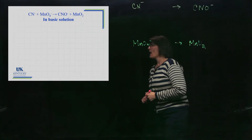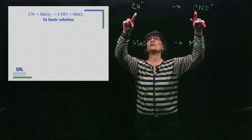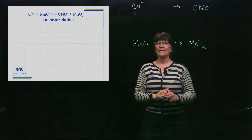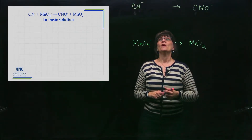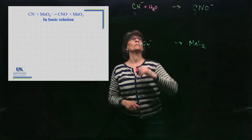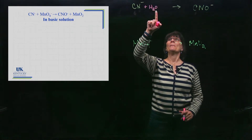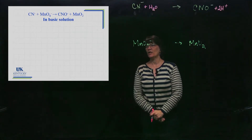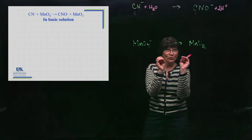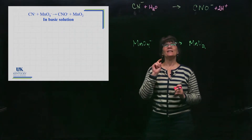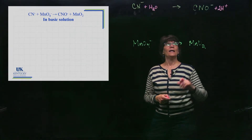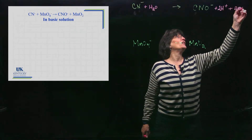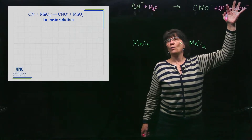Step one for the CN⁻ half-reaction: balance elements other than oxygen and hydrogen. One carbon and one nitrogen on each side — balanced. Now balance oxygen: there is one oxygen on the product side, so add one water to the reactant side. That brings hydrogens along, so we add H⁺ on the opposite side. But since it's basic, we don't leave H⁺ — we add OH⁻ to both sides.